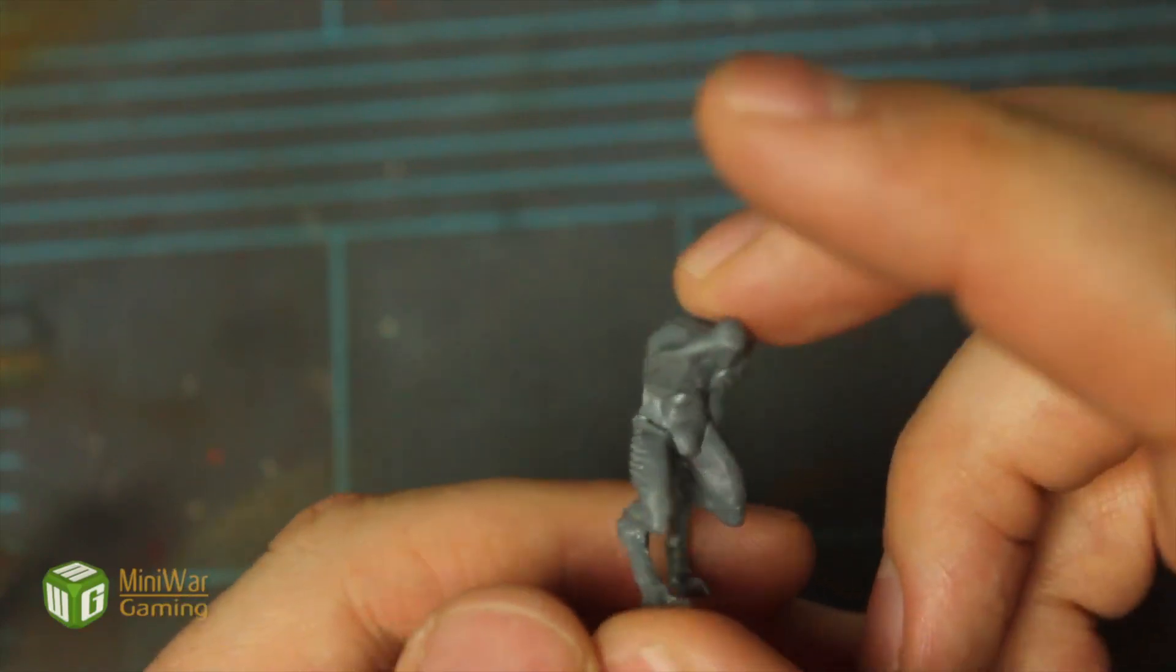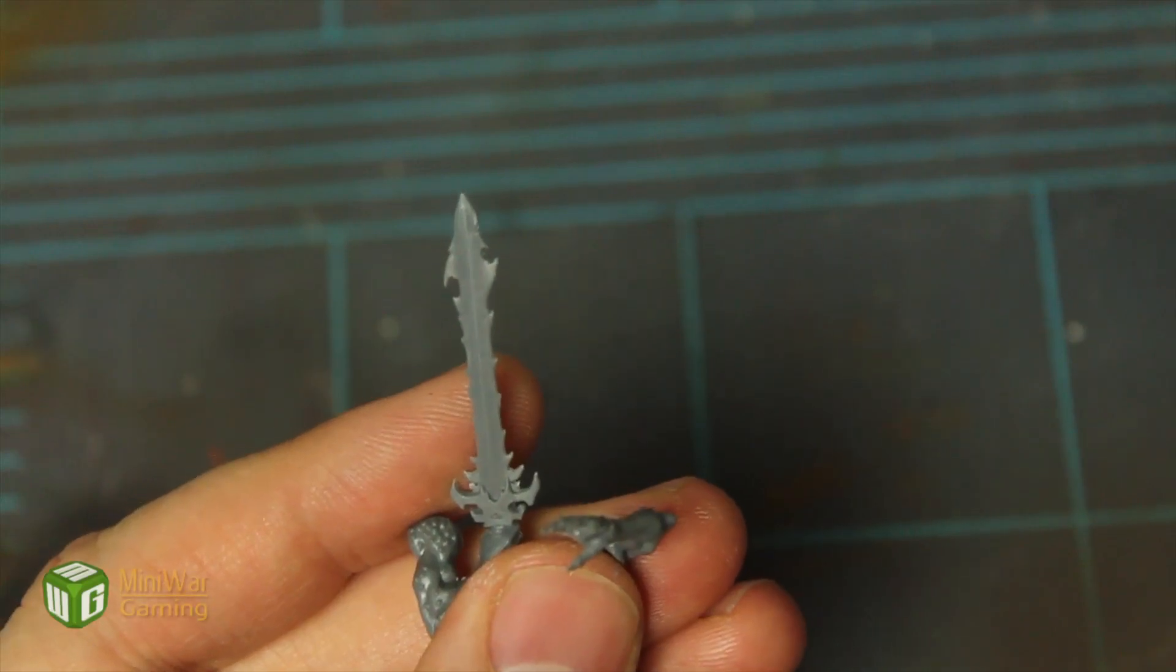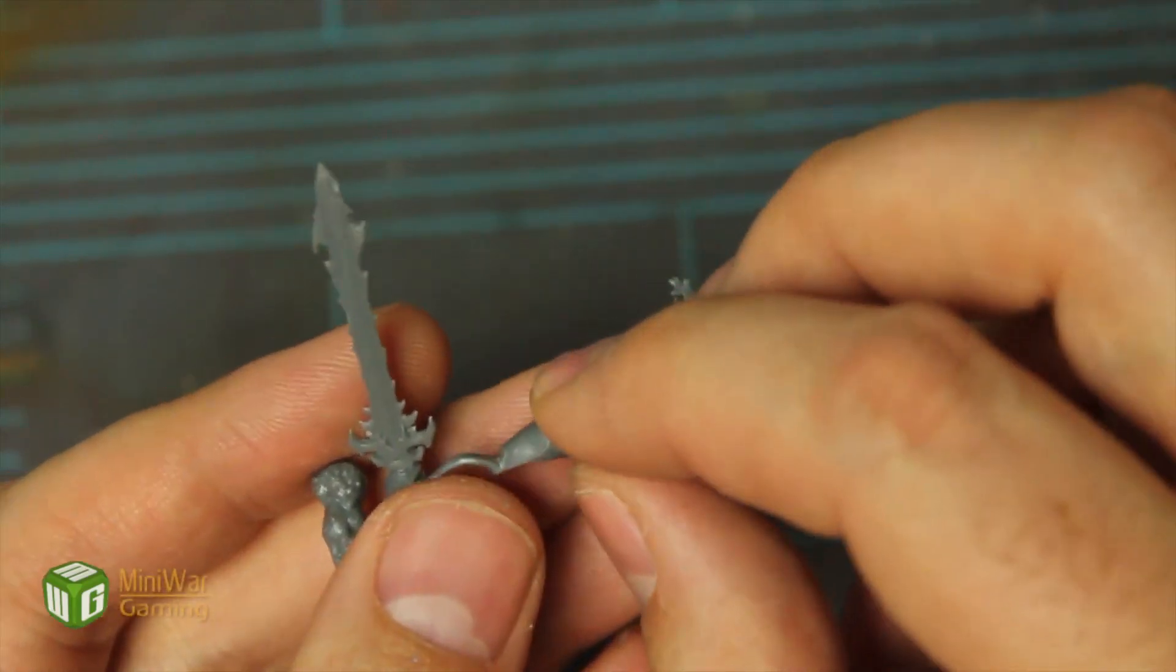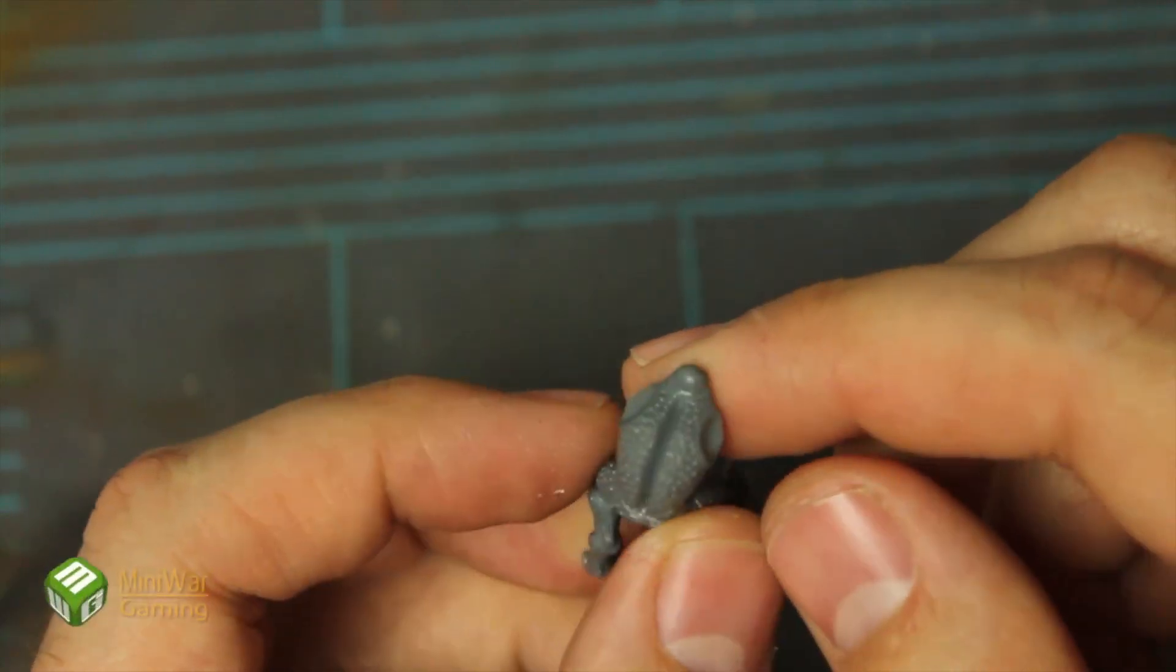So we've got the body, which is just the two legs and the body piece put together, the arm with the weapon, the arm without the weapon, and we've already got the parts of the head also clipped out and cleaned, so we're going to go ahead and get started.